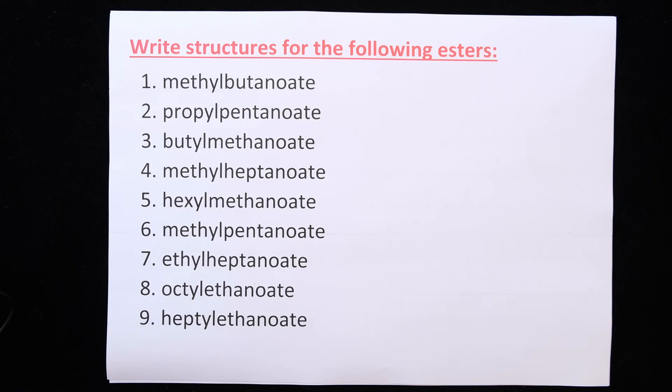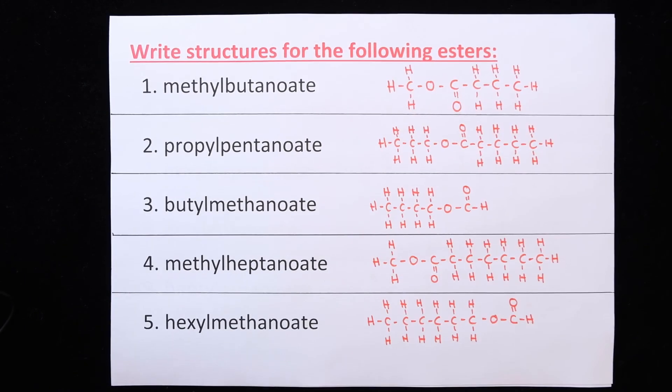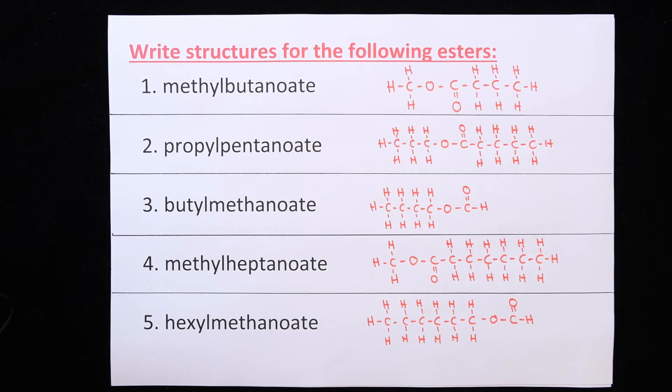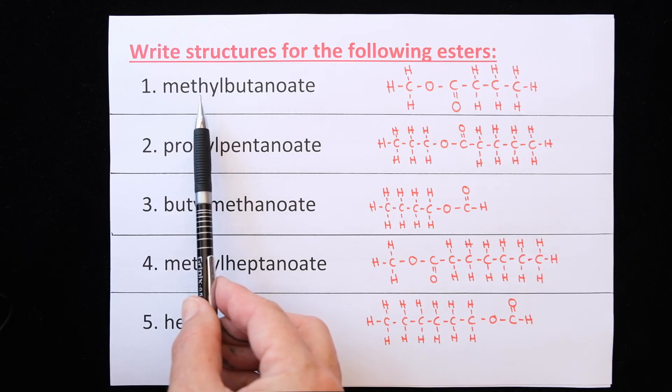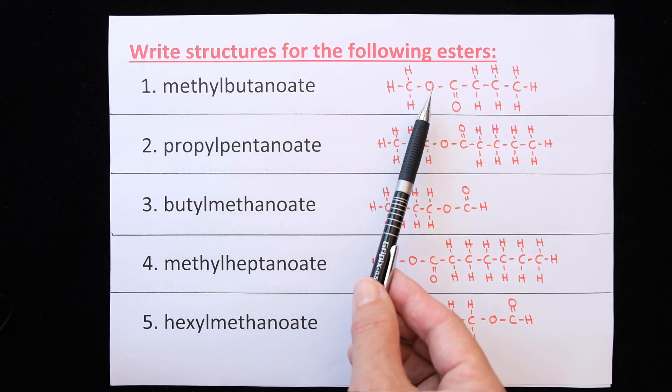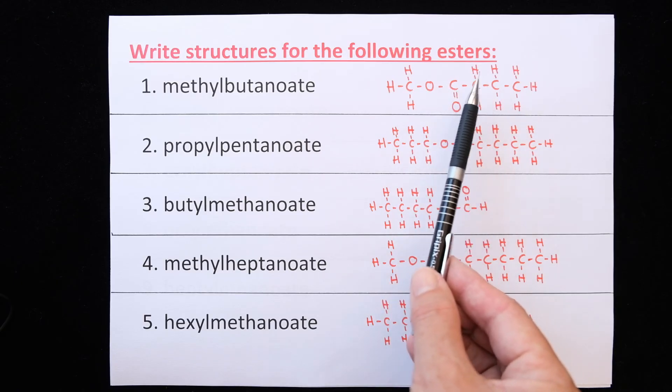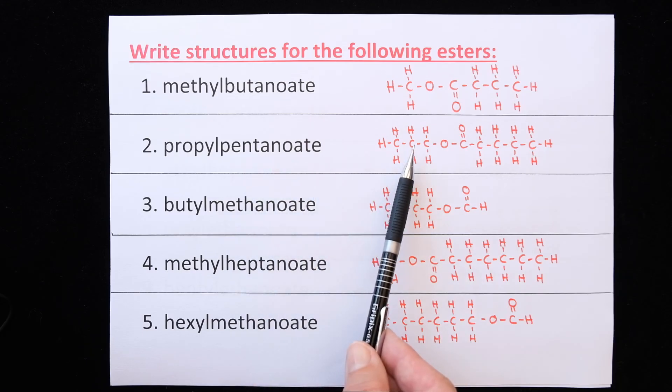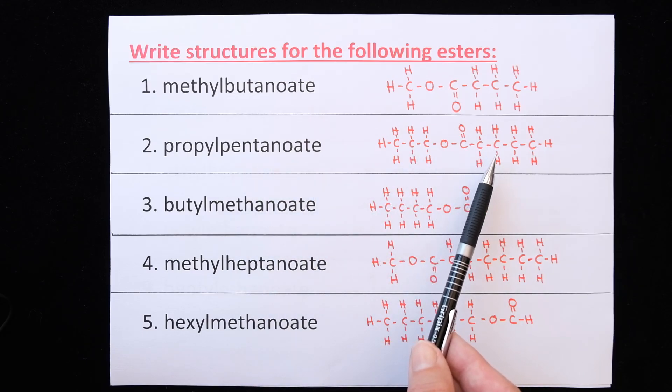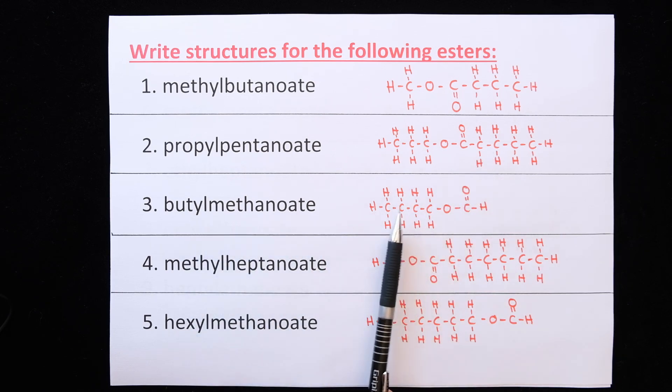Here are the names of nine esters. Pause the video and try to write the structure for each one. I will briefly go through the answer of each one. So methylbutanoate, methyl would come from methanol. So there's your carbon with one oxygen. And the link to your butanoic acid part which is now butanoate.